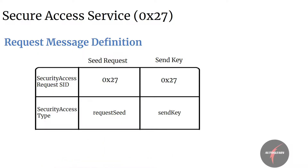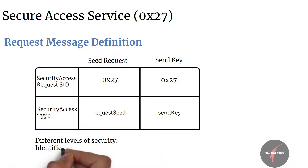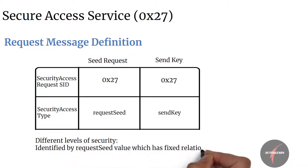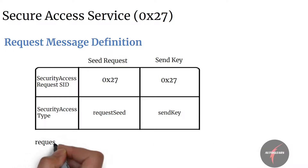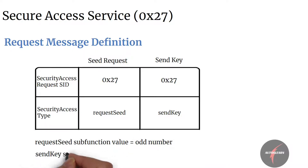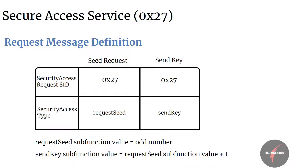If a server supports different levels of security, then each level shall be identified by the request seed value which has a fixed relationship with the send key value. The request seed sub-function value shall always be an odd number, and the corresponding send key sub-function parameter value for the same security level shall be request seed sub-function parameter value plus 1.